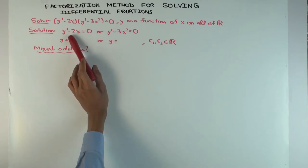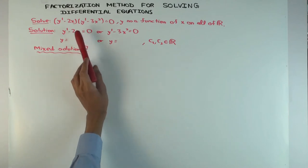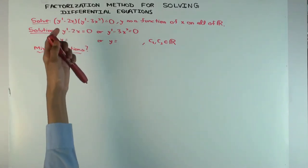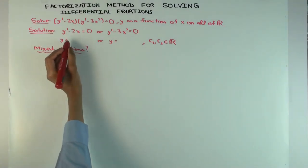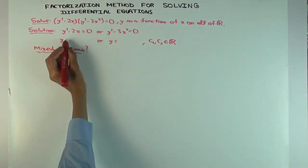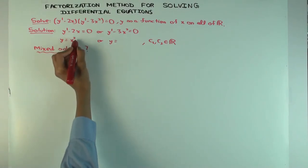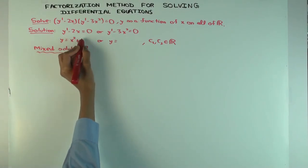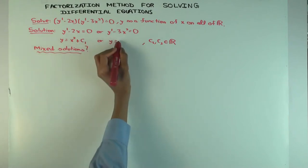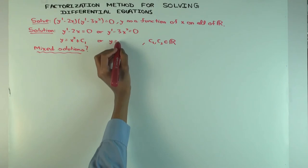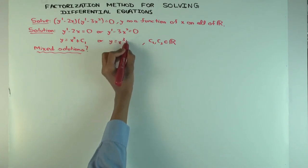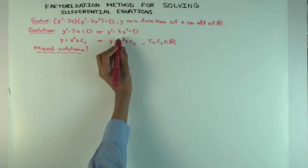What is the general solution for the first one? y' minus 2x = 0 — the solution is y = x² + c₁. And the general solution to the other one is y = x³. So I picked very simple ones which are just direct integration problems.